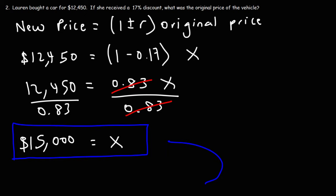So now you know how to calculate it using this formula. So keep this in mind. The new price is equal to 1 plus or minus R times the original price.